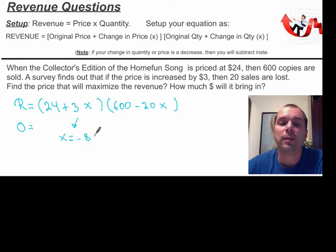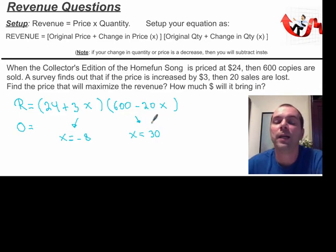If you can't get that in your head, then just say 24 plus 3X equals 0, and isolate for X, and you'll get it. And in this case, well, 20 should be something like 30, right? 2 times 3 is 6, and 0 and 0, yeah, 30. 30 will give me the zeros.